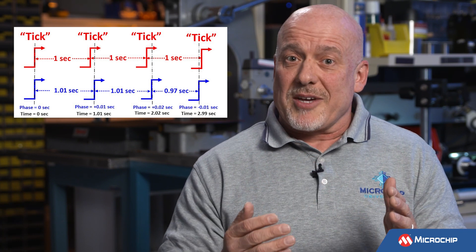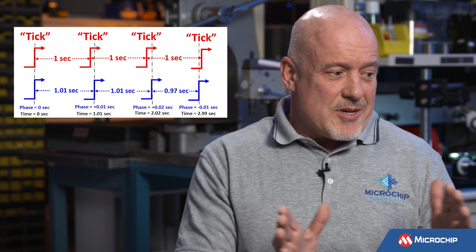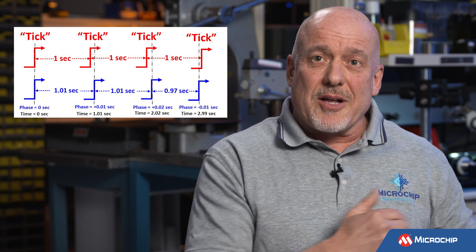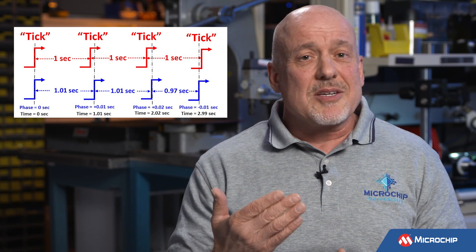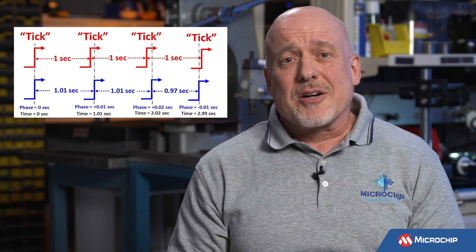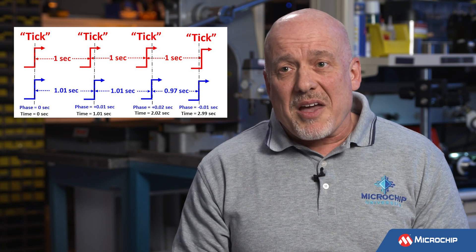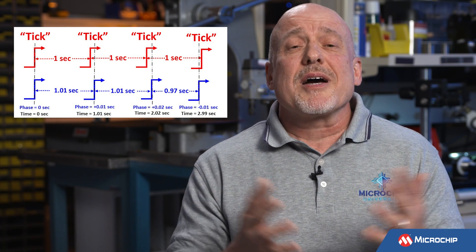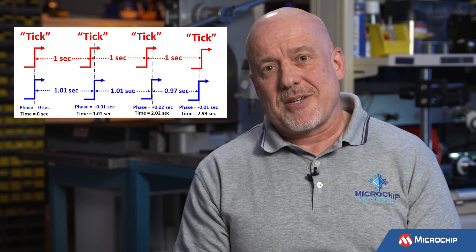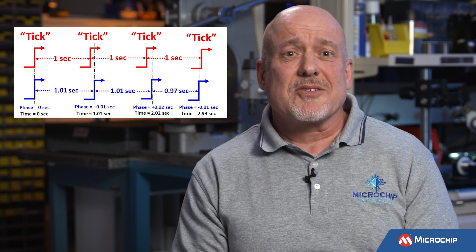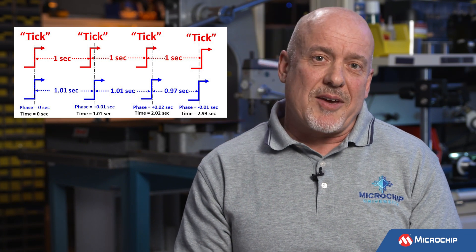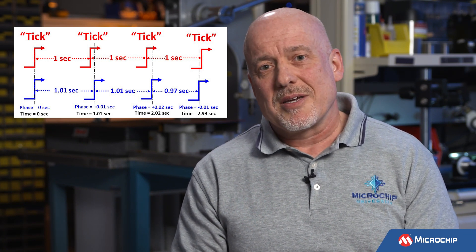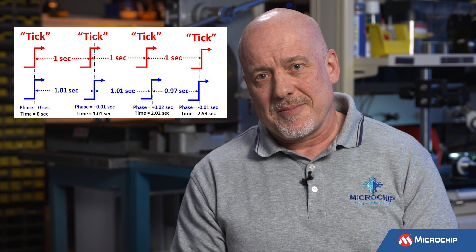And, for example, during the next period, the clock rising edge may occur at 2.99 seconds. In this case, the phase is negative 0.1 seconds.